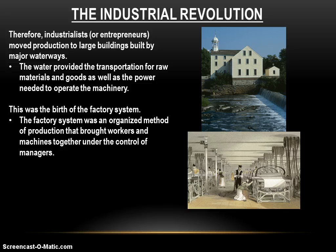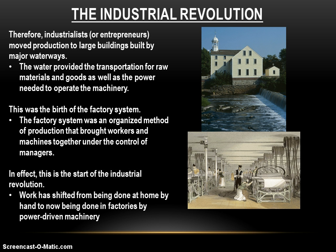The machines are too big and too expensive for farmers to use at home? The entrepreneurs figure out a way to make this work. They decide to build big buildings next to waterways — because the machines are powered by water — and put all the machines inside. Then they bring workers in to work the machines and hire managers and foremen to oversee the whole process. This is the birth of the factory system. The entrepreneurs innovate to meet a need: the need is the production of wool, the machines are there, and the innovation is the factory system, which brings together the machines and the labor under the control of managers.